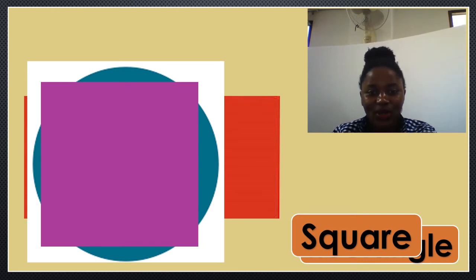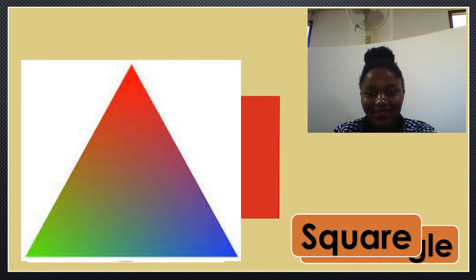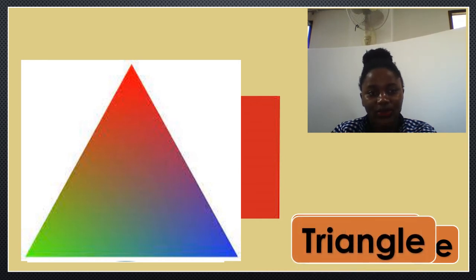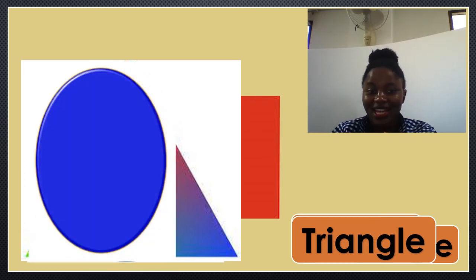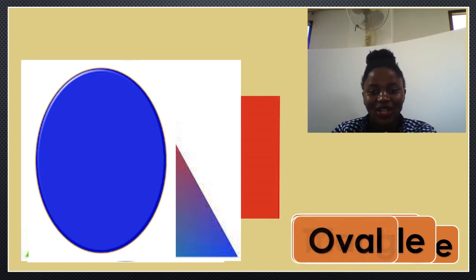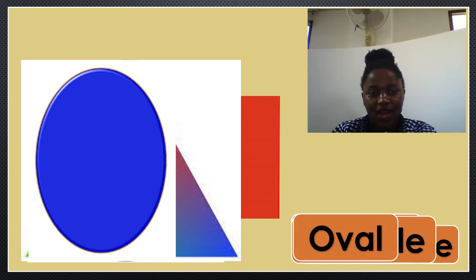Let's look at this. How do we call this? Do you know it? Yes, thank you so much. It's called a triangle. Triangle. And lastly, we have this. Do you know the name of this shape? Good job. It's called an ovo. Ovo. Ovo.